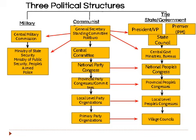The most powerful organs of the Communist Party in China are the General Secretary, who is the lead head of the party, and the Politburo Standing Committee, which is about 18 individuals. Those are the most powerful men in China.